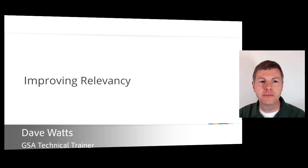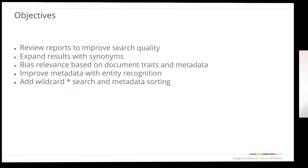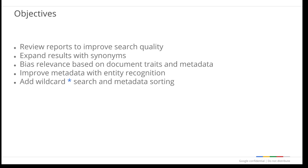Hi, I'm Dave Watts. Welcome to the sixth part of GSA 200, Improving Relevancy. In this session, we'll learn how we can identify potential search problems using reports and improve search results using synonyms, biasing, entity recognition, and wildcards. We'll also learn about metadata sorting.